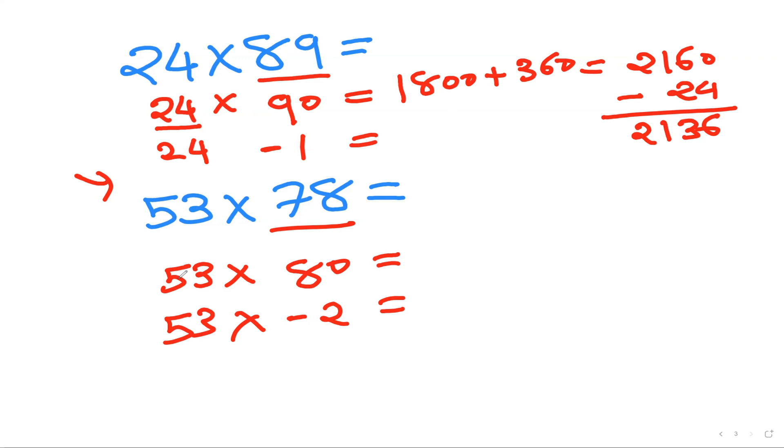Now 53 times 80. So you can see like 50 times 80 which is 4000, and 3 times 80 is 240, which is giving me 4240. And 53 times minus 2 is minus 106. And if I do that, 4240 minus 106, what do I get is 4134, which is the answer.